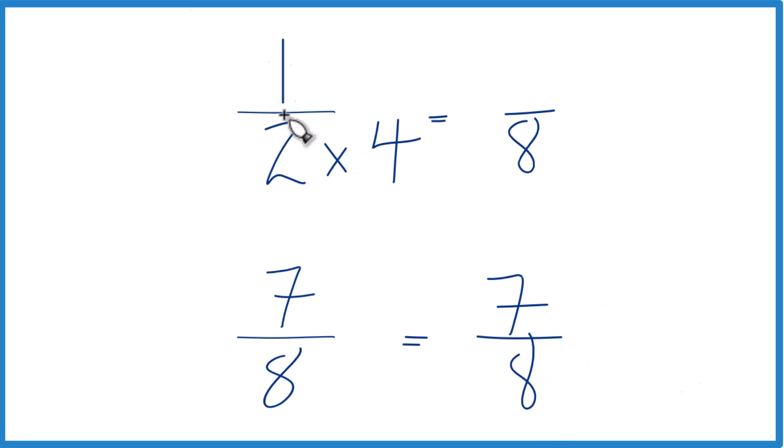But we can't just multiply the denominator by four, we need to multiply the numerator by four as well. Four over four is just one. Multiplying by one, we don't change the value, just the way it's written.